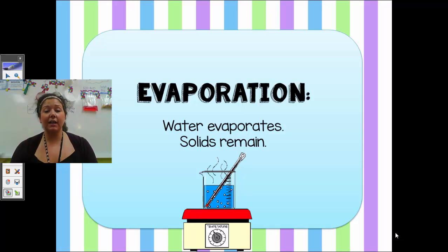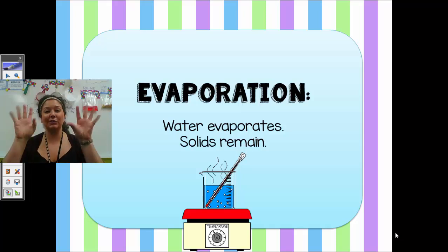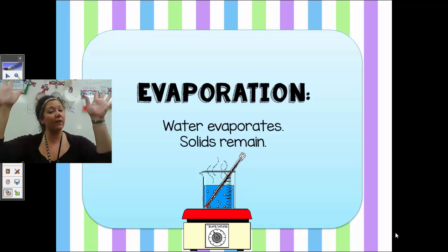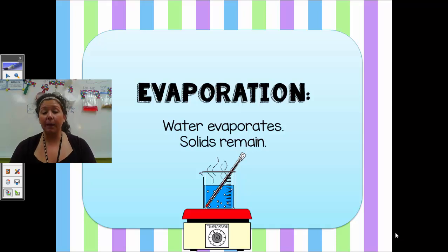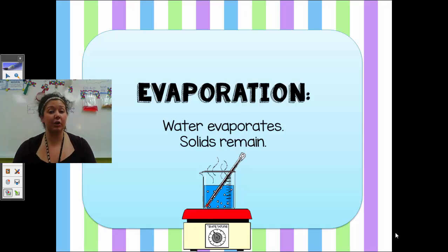The last way I can separate a mixture is evaporation, and I'm going to use evaporation for my special mixtures called solutions. I can use evaporation to separate a solution because the water is going to evaporate and the solid will remain in the container, because solids do not evaporate. The water will go up, the solid will stay in the cup, and therefore my special mixture is now separated.